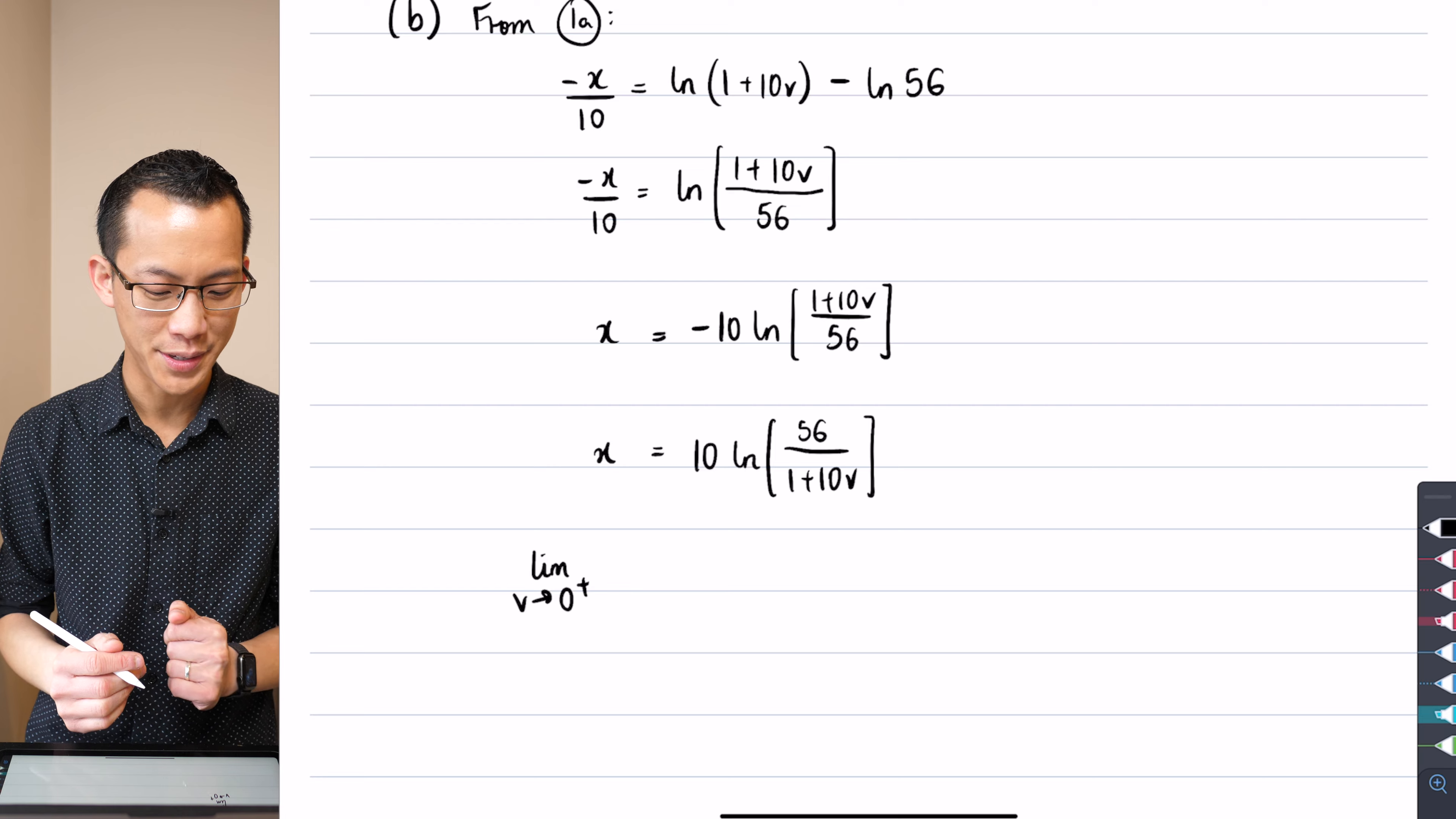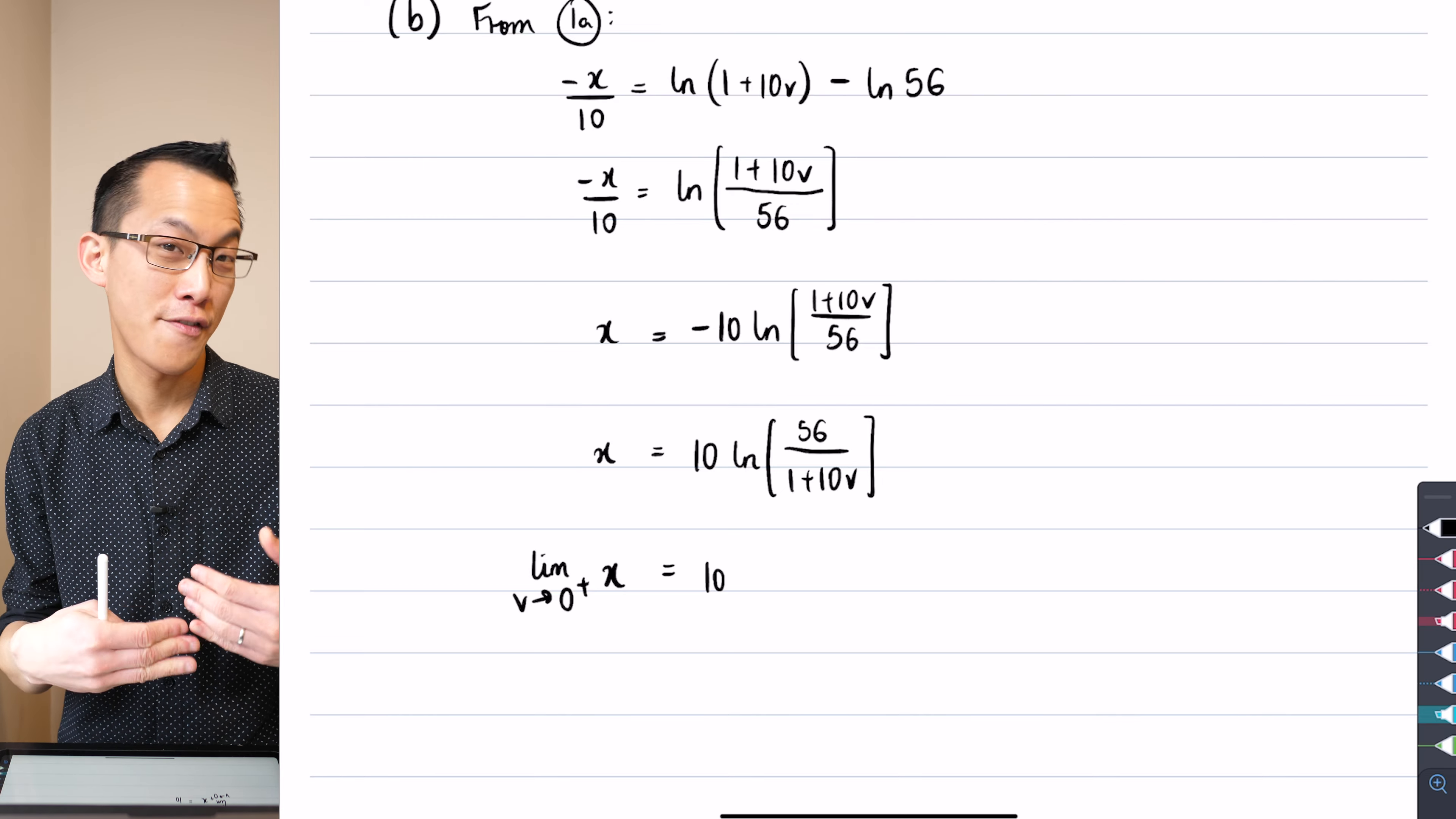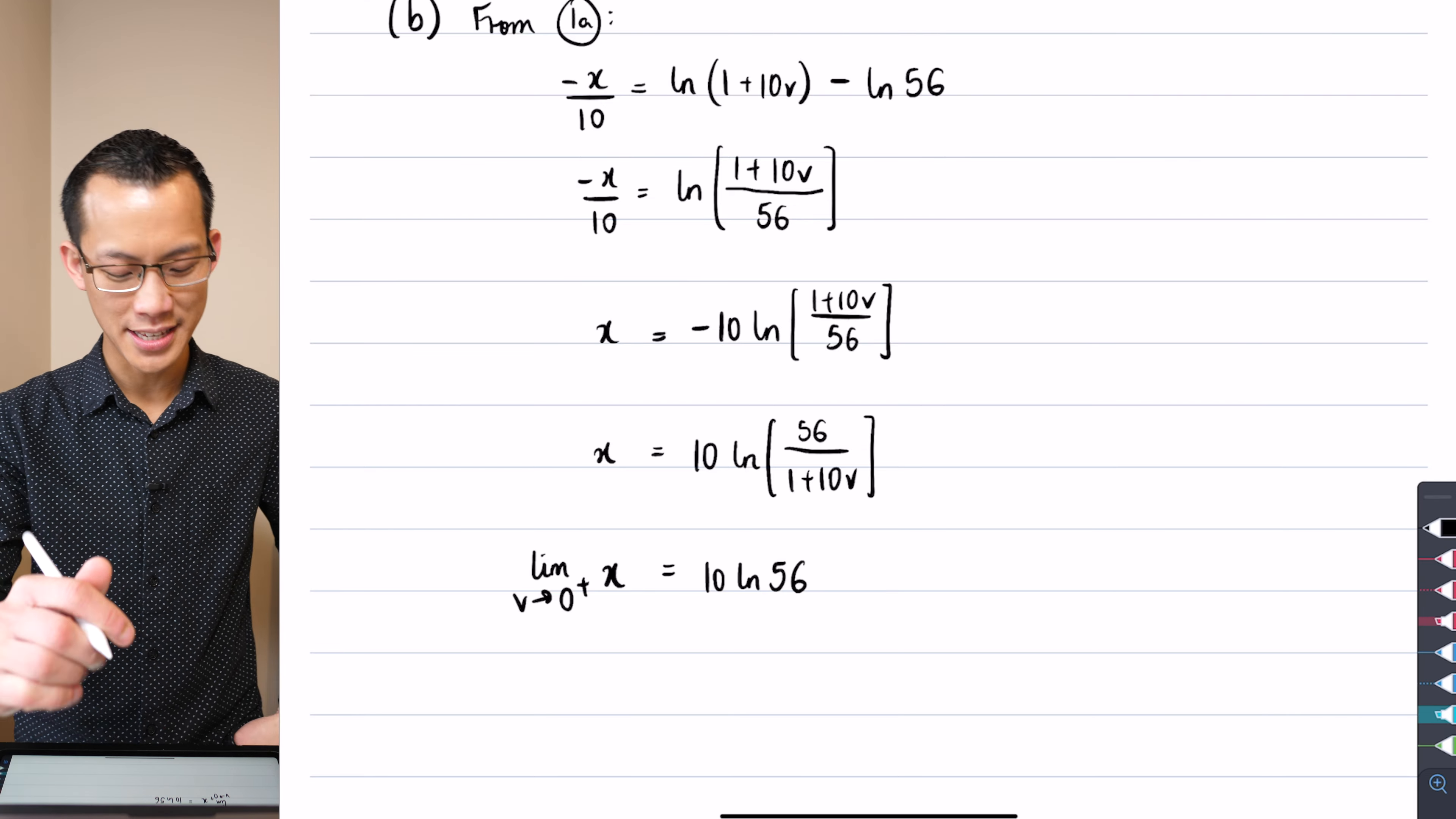So the limit is being applied to x over on the right-hand side, because that v in there, there's actually no problem with treating it as if it were actually zero. You can see what I'm going to get is log of 56 over 1 plus 0. Last I checked, 1 plus 0 is 1, so 56 over 1 just gives me 56, like so, 10 log 56. And if you reach for your calculator, go ahead and do that, and give me some decimal places.